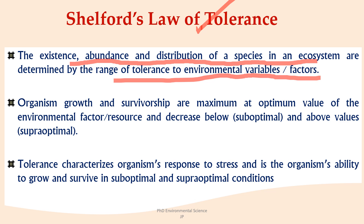The tolerance range includes three zones. The optimum range is the range of environmental conditions where the species grows, reproduces, and survives most effectively — the ideal conditions where maximum growth and survivorship takes place. The suboptimal range covers conditions below the optimum where growth and survival are reduced but the species may still persist. The supra-optimal range covers conditions above the optimum where growth and survival are impaired, leading to stress or death. Tolerance is the organism's ability to grow and survive in suboptimal and supra-optimal conditions.